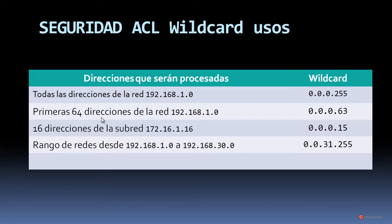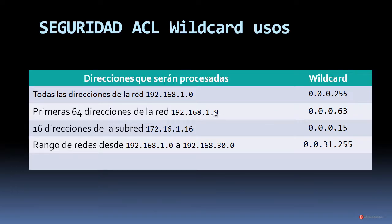Para revisar las primeras 64 direcciones de la red 192.168.1.0 de clase C, vamos a utilizar una versión más reducida de esa Wildcard. Solamente necesitamos revisar un bloque de 64 direcciones, por eso respetamos la dirección principal de red con 0.0.0 en los tres primeros octetos y definimos ese bloque de 64 para el último octeto. Si hubiéramos definido la 192.168.1.64, revisaríamos las direcciones desde la 64 hasta la 128, no las primeras 64. Esto es importante recordarlo porque puede evitar problemas.